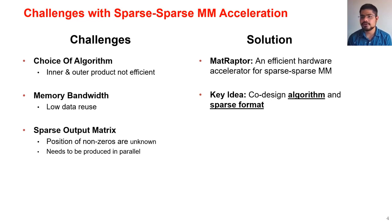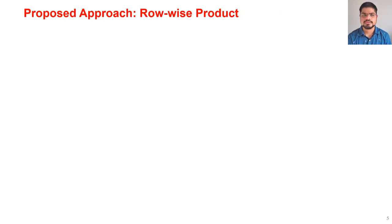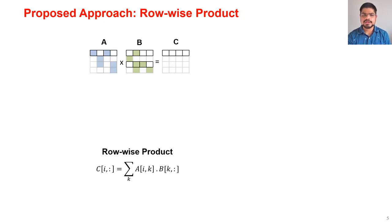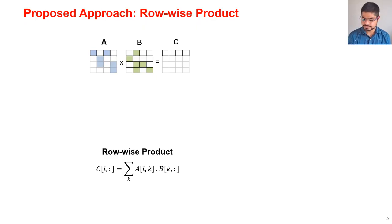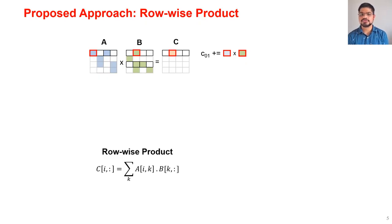To solve these challenges we propose MatRaptor, an efficient hardware accelerator for sparse sparse matrix multiply. The key idea behind MatRaptor is the co-design of algorithm and sparse format. MatRaptor employs a row-wise product approach: we read a non-zero row of matrix A and multiply it with the corresponding rows of matrix B to produce a single output row of C. For example, we first read a non-zero value from matrix A — its column index is zero — so we index into the zeroth row of matrix B and perform multiply-accumulate.